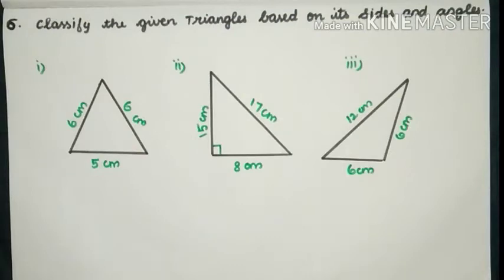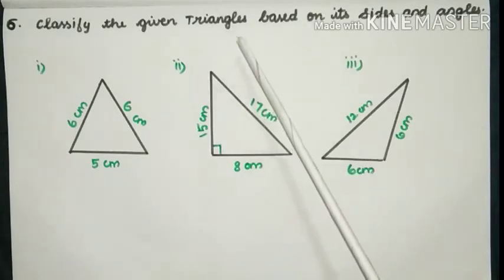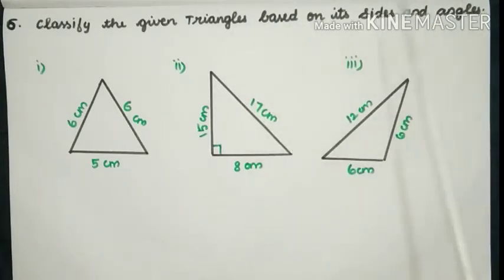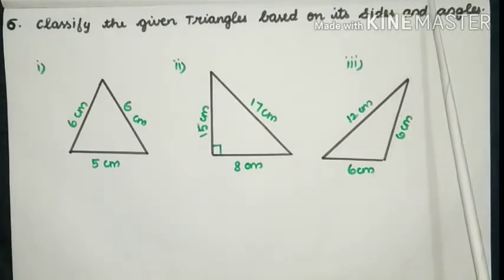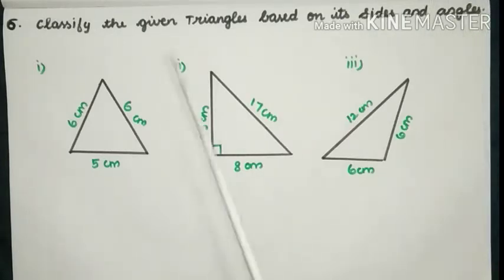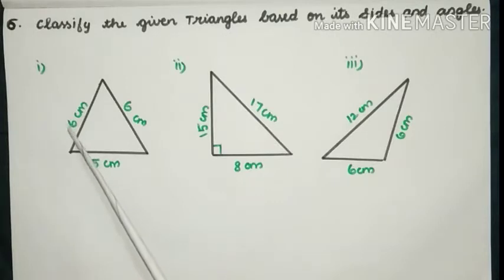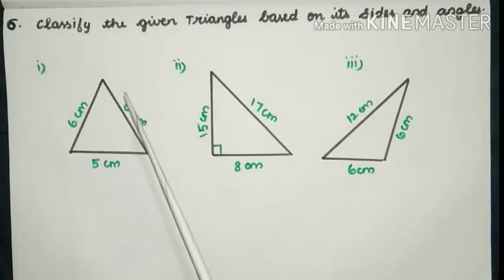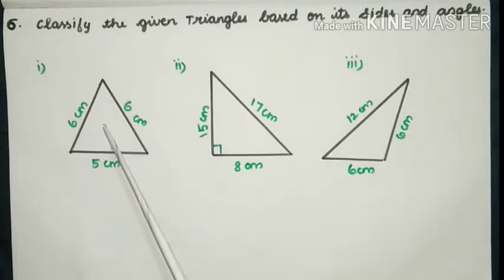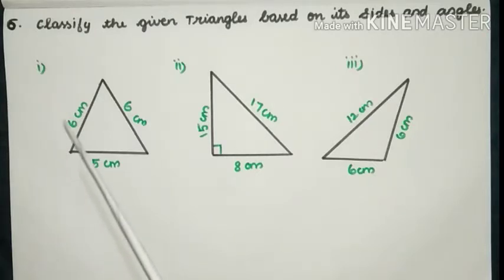Third question: classify the given triangles based on its sides and angles. We have to mention Scalene, Isosceles or Equilateral for sides, and Acute, Right or Obtuse angled triangle for angles. First one: two sides of the triangle are equal and one is different, so it is called an Isosceles triangle. Now let's find the angle classification.